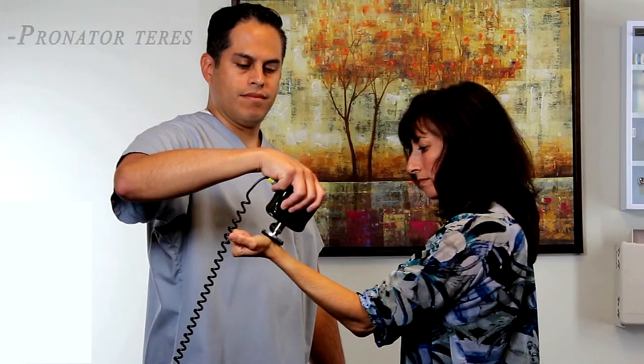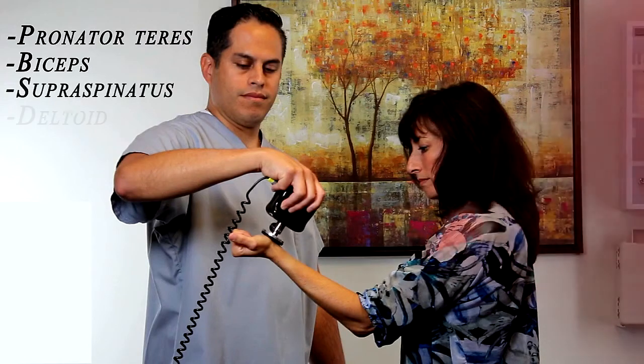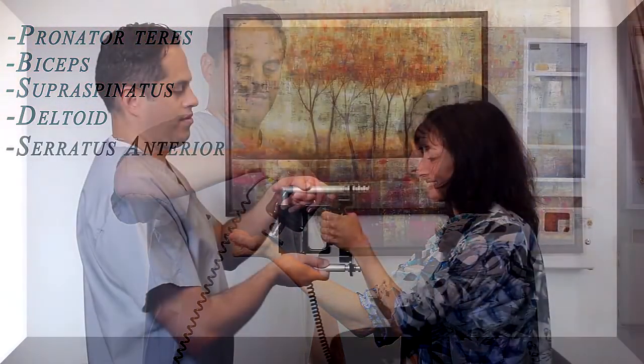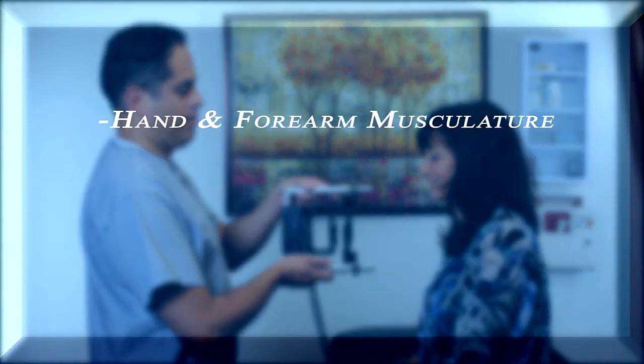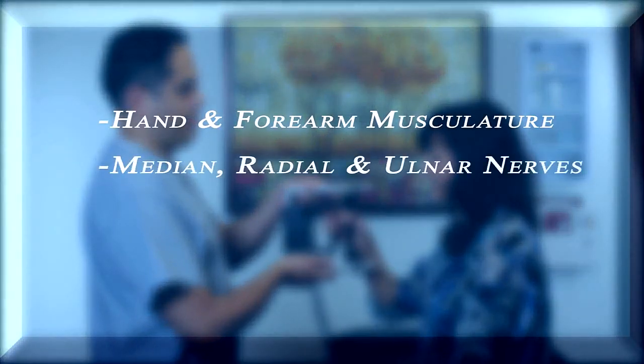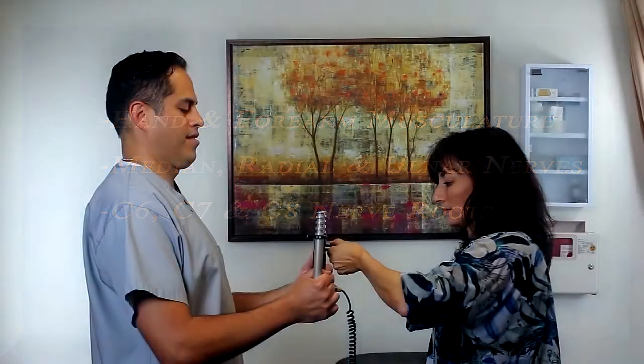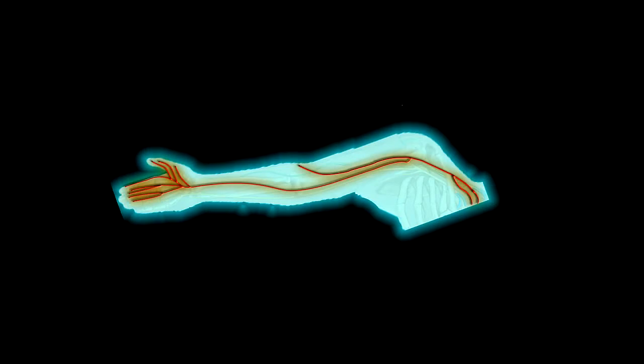Muscle testing revealed weaknesses in the pronator teres, biceps, supraspinatus, deltoid, and serratus anterior muscles. Grip strength revealed possible problems with hand and forearm musculature, the median, radial, and ulnar nerves, and C6 through C8 nerve roots. Pinch grip revealed weaknesses of the hand intrinsic muscles, the median nerve, and the C6 through C7 nerve root.